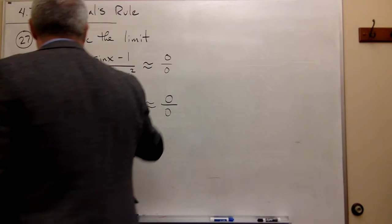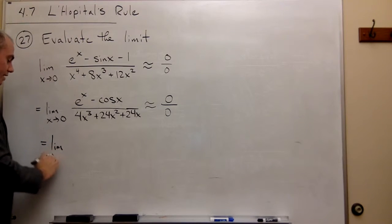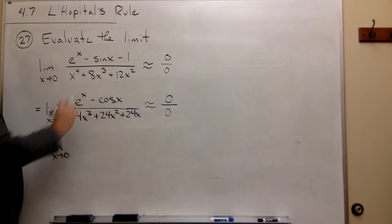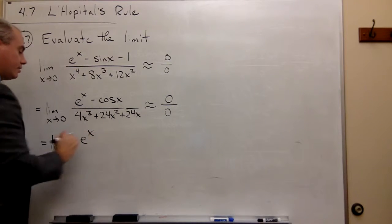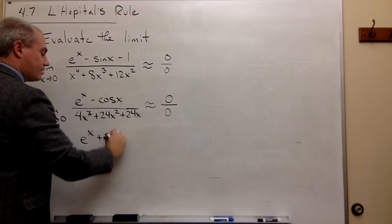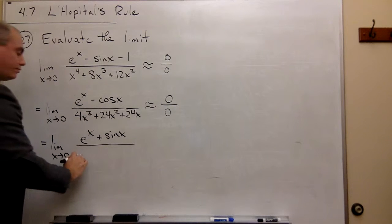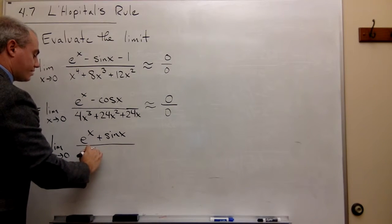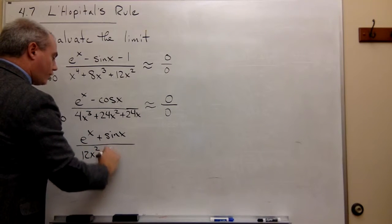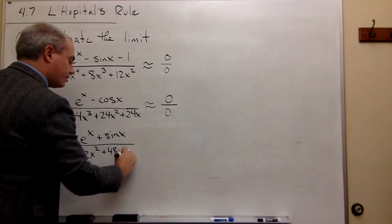Let's take the derivative of the top and the derivative of the bottom. So I get the limit as x goes to 0 of... the derivative of the top: the derivative of e^x is e^x. The derivative of negative cos(x) is positive sin(x) divided by... the derivative of 4x^3 is 12x^2. The derivative of 24x^2 is 48x. And the derivative of 24x is 24.